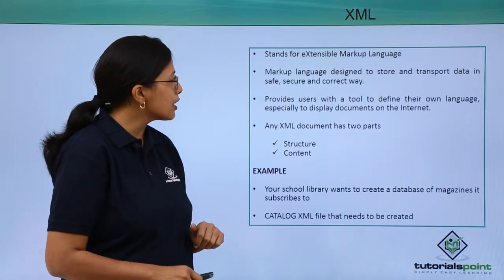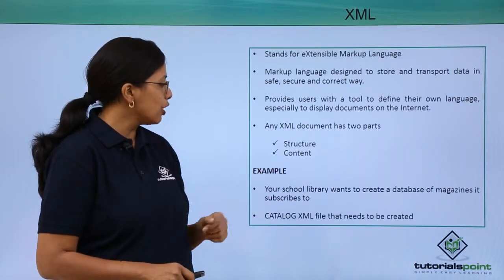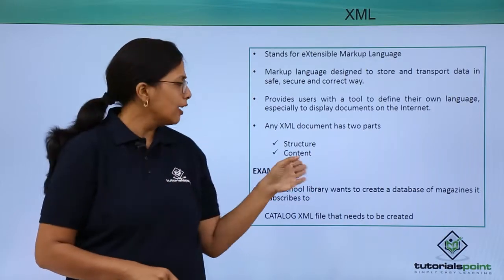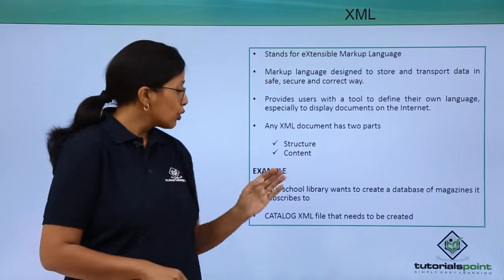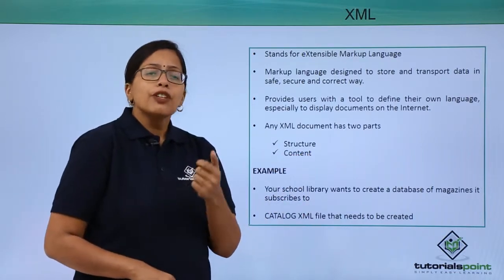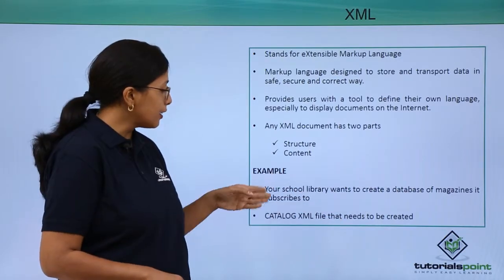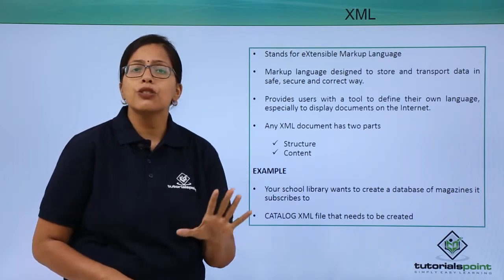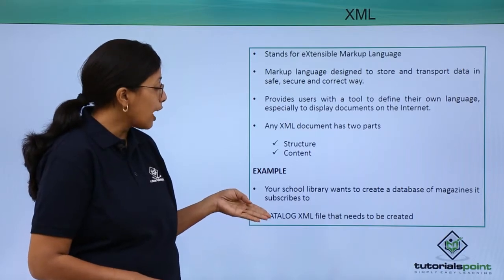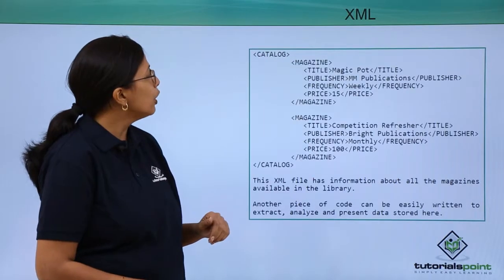So how does XML actually do it? Any XML document will have two parts: its structure and its content. Structure will define what its elements are, and content will be your actual data. Let's take an example to understand this in a better way. Say your school library wants to create a database of magazines that it subscribes to — basically a catalog. I am going to create a catalog XML file. Let's see how that catalog XML file will look like.